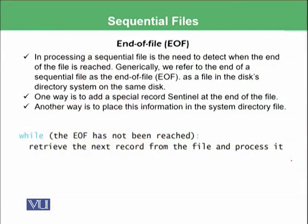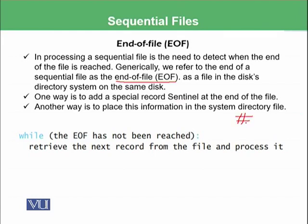When processing a sequential file, there is a need to detect when the end of the file is reached. We refer to this as the end of file, or EOF. One way is to add a special sentinel record at the end of the file — for example, when the file is being written, you can add a sentinel such as a hash symbol, meaning the file has finished. Normally, a backslash-zero (null character) is used to denote that the file is ending.